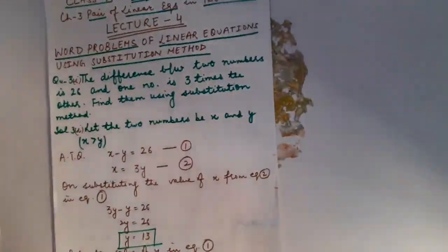In substitution method, first of all you will have to find the value of one variable in the form of the other variable from any of the equations. After that, you will be putting that value in another equation to obtain a linear equation in one variable, and then you have to solve it. So, let us start word problems.